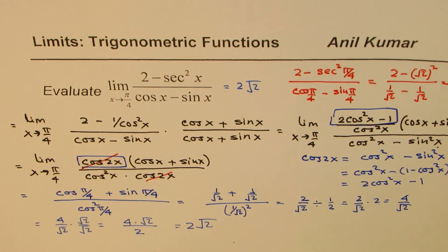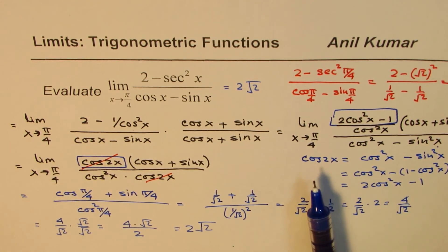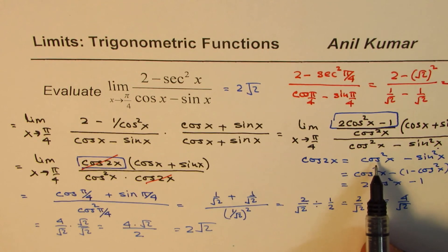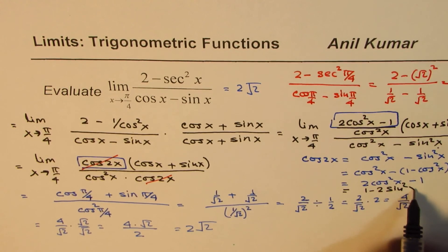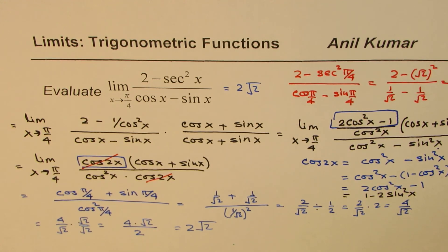A lot of trigonometric identities are involved in solving this question, but they are not that difficult. Remember that cos 2x can be written as 2 cos squared x minus 1, and also as 1 minus 2 sin squared x. We'll apply these formulas in solving other limits for trigonometric functions. I'm Adil Kumar — I hope this helps you review a few concepts. Thank you, and all the best.